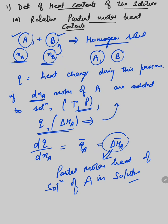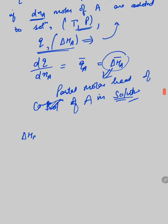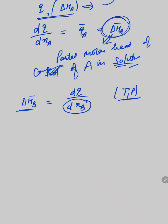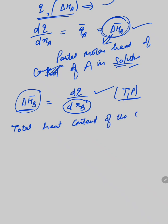Similarly, we can find delta H̄B, which is the partial molar heat of component B in the solution. This is given by dQ/dnB when we are adding dnB moles to the solution at constant temperature and pressure. Then the total heat content of the solution is given by delta H = nA × delta H̄A + nB × delta H̄B.